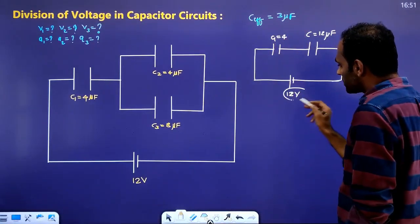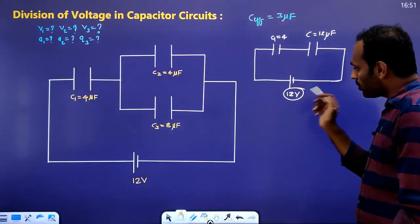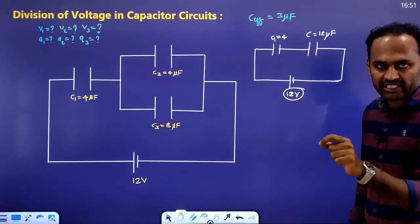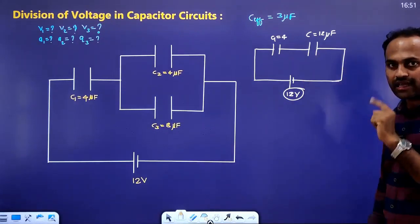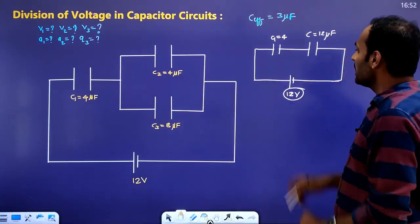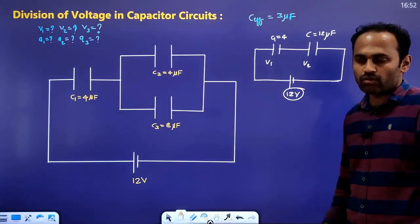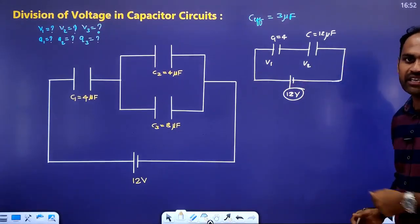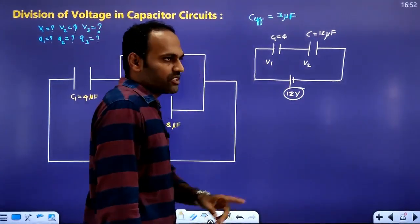We apply 12 volt to this total series combination. The voltage has to get divided across the series capacitors. In a series combination the charge on each capacitor is the same. The voltage of the first capacitor is V1. This is the main technique — you can easily calculate the voltage division.